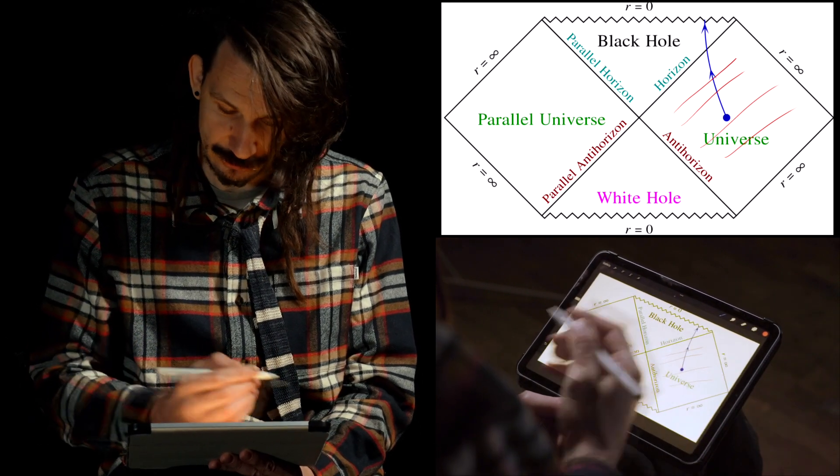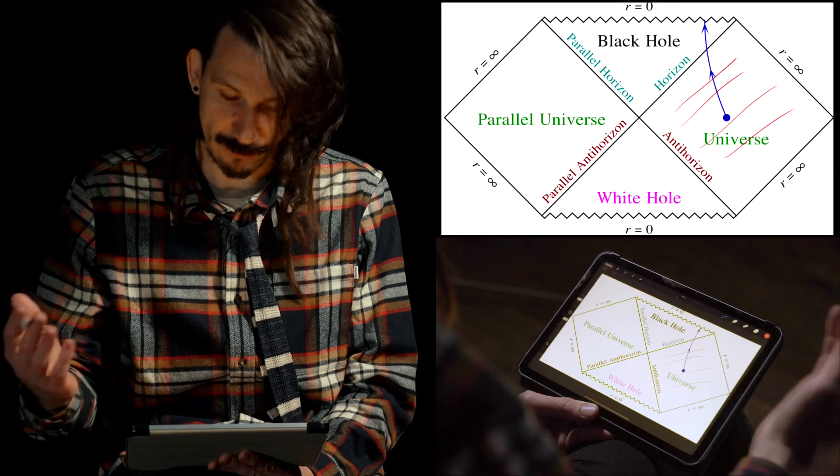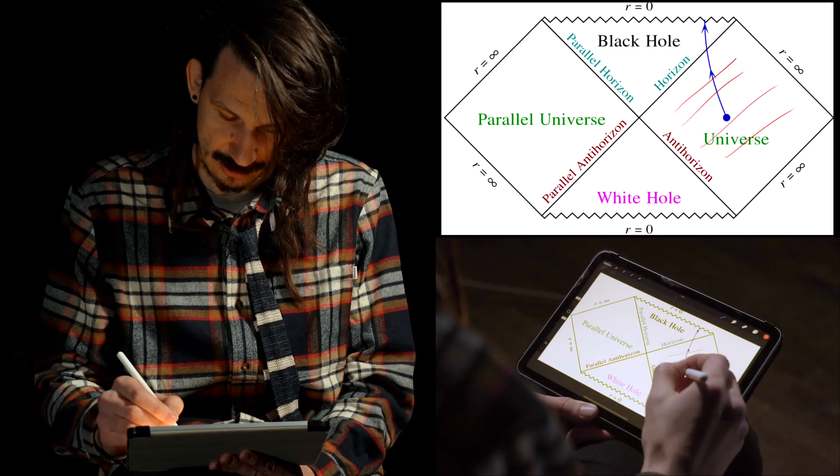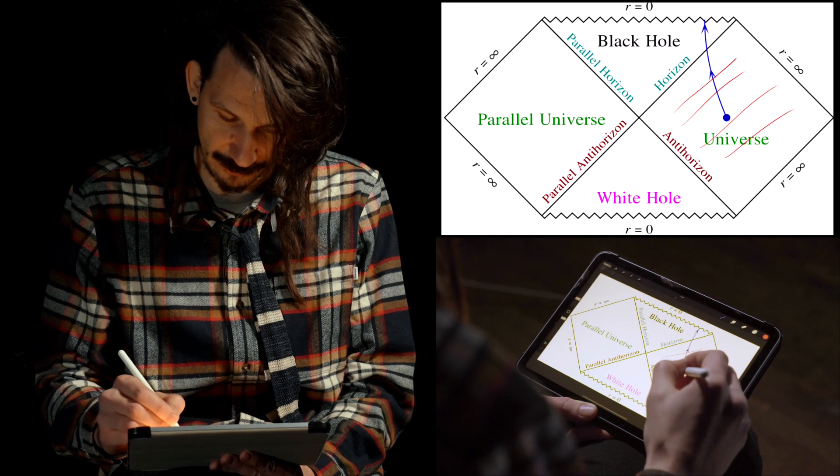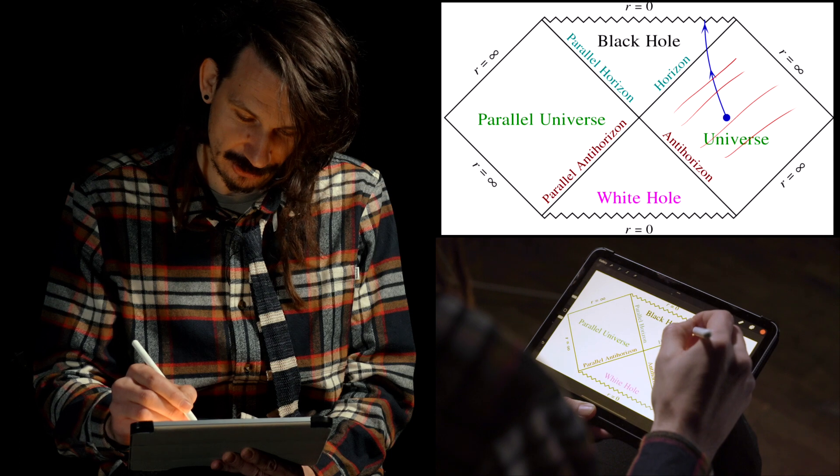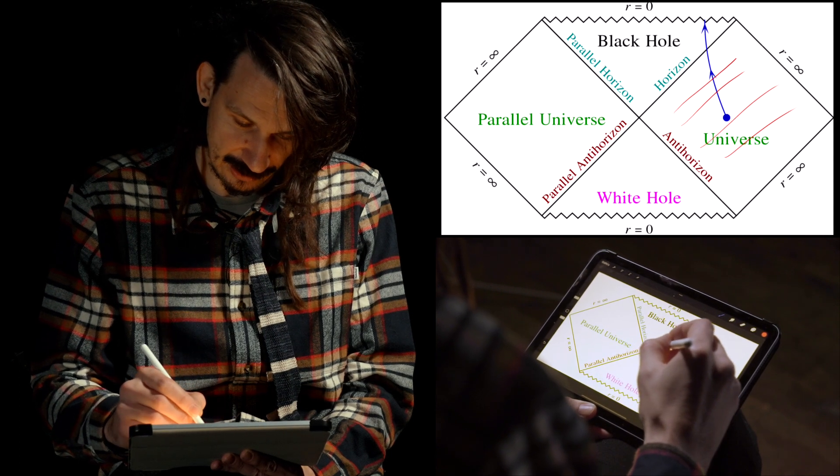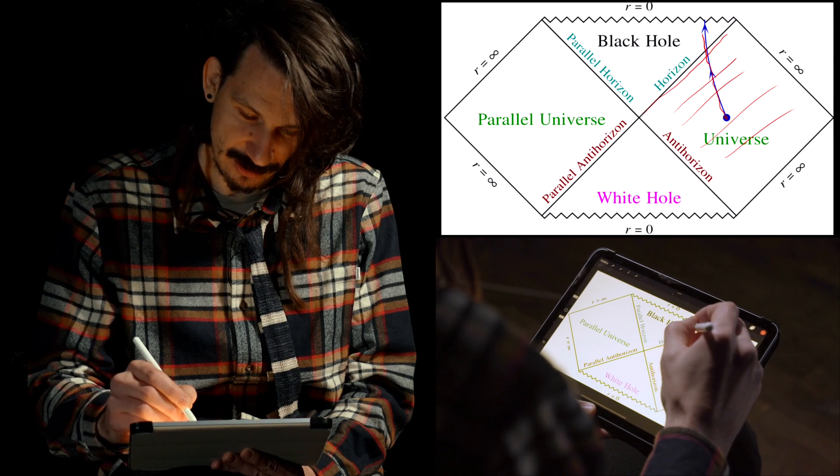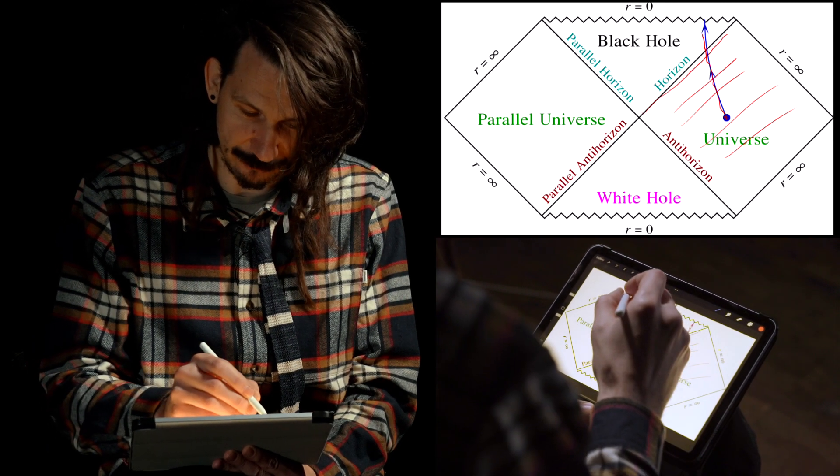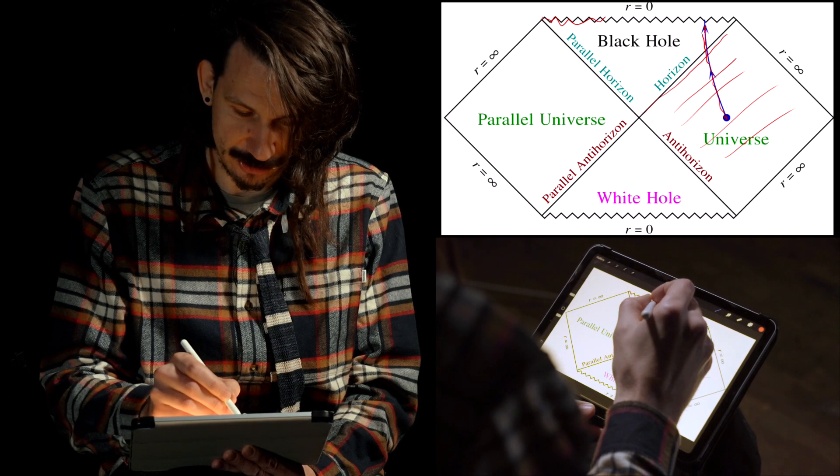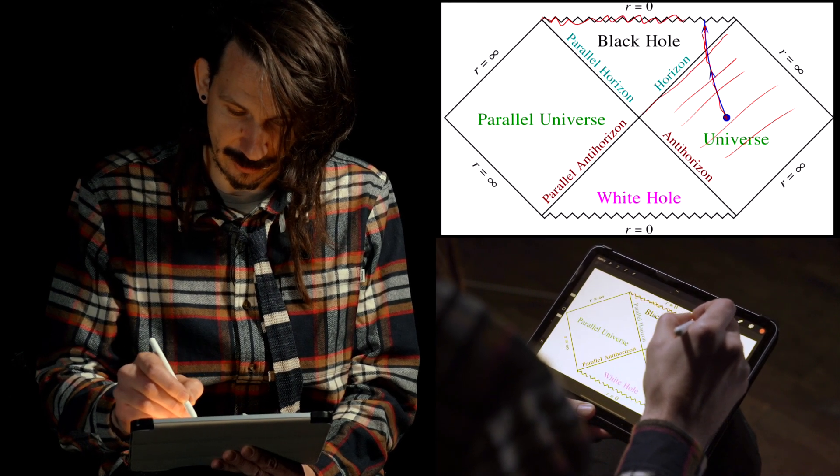And in this universe you can imagine someone who's falling into the black hole. For instance, this person here is following a specific trajectory that then crosses the horizon, which is this line over here. This person crosses the horizon and ends up in this wavy line which represents the singularity of the black hole.